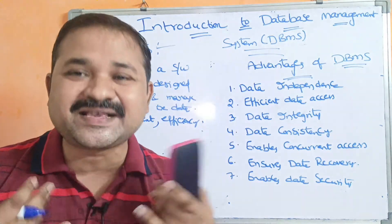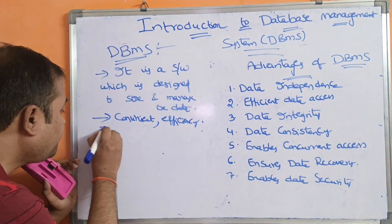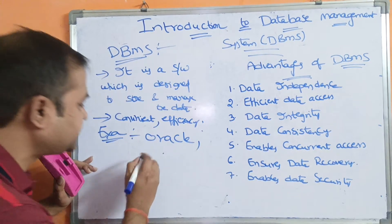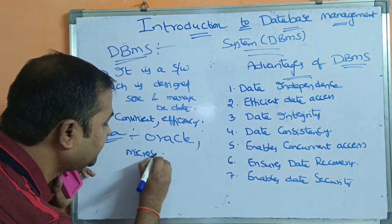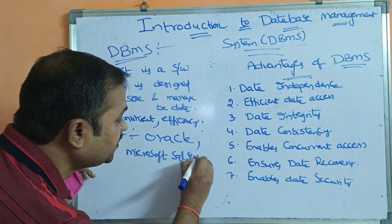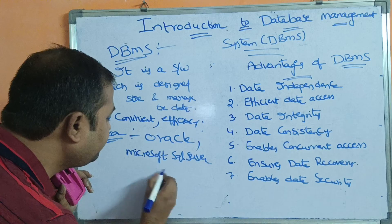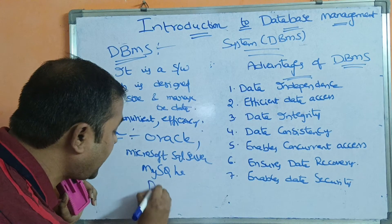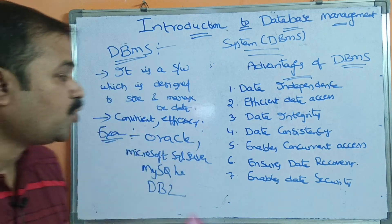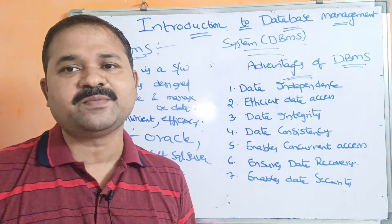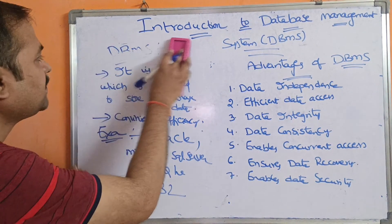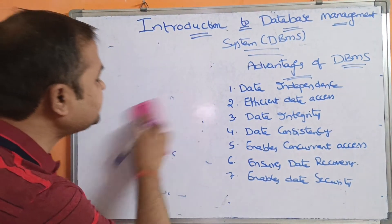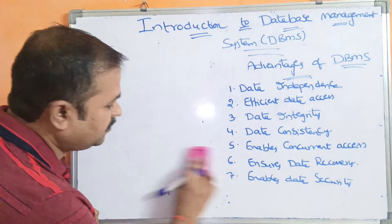The best examples of DBMS are Oracle, which is the most commonly used; Microsoft SQL Server; MySQL; and DB2. These four are the most commonly used database management systems. This covers what is data, information, knowledge, database, database applications, DBMS, and its examples.